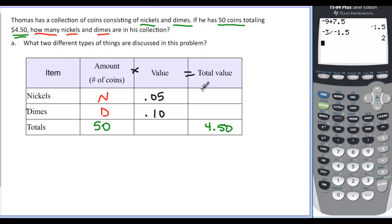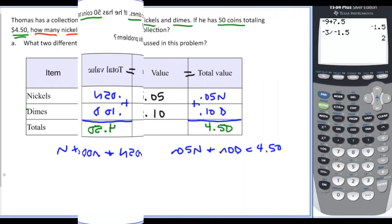So remember that it's amount times the value is equal to the total. So we could say that we have .05n, and we have .10d, and now we have two equations. And if we read those equations, remember we said that we could read them up and down or left and right. So n plus d would be equal to 50. And over here,